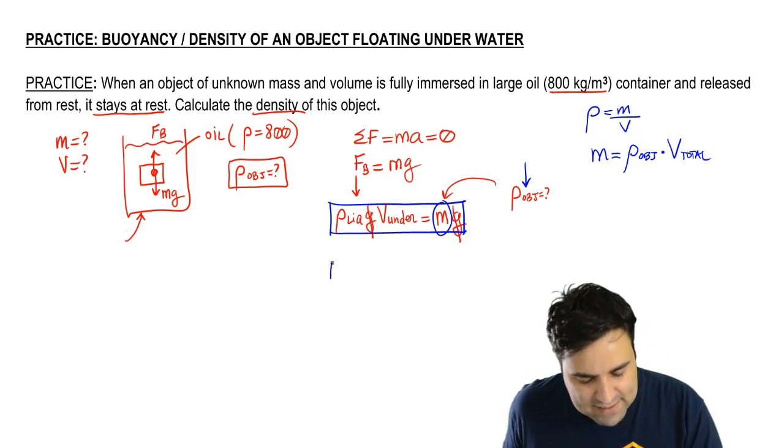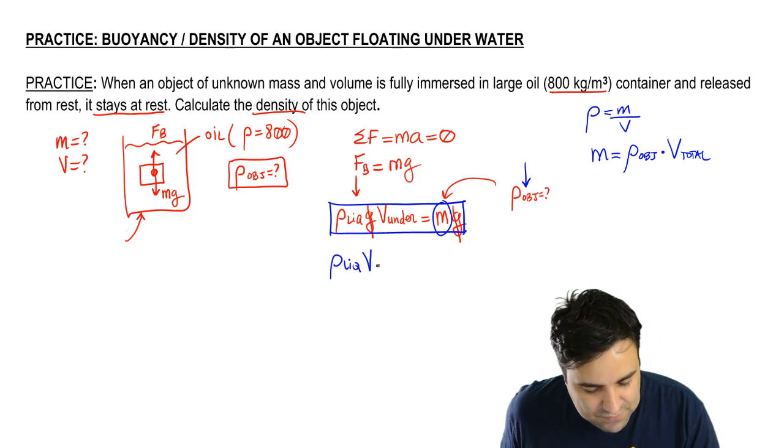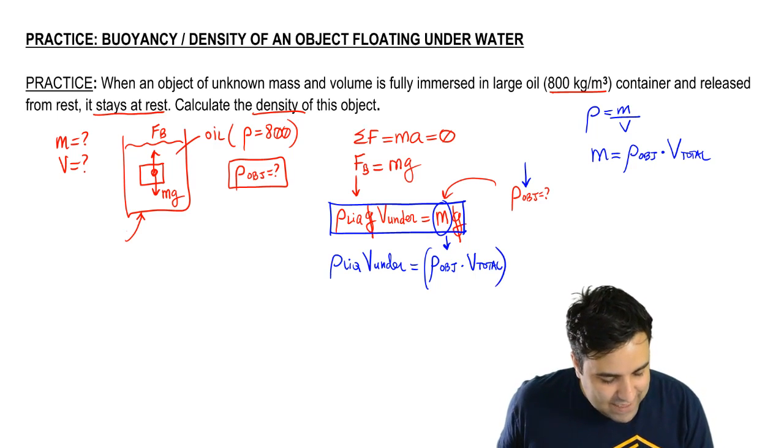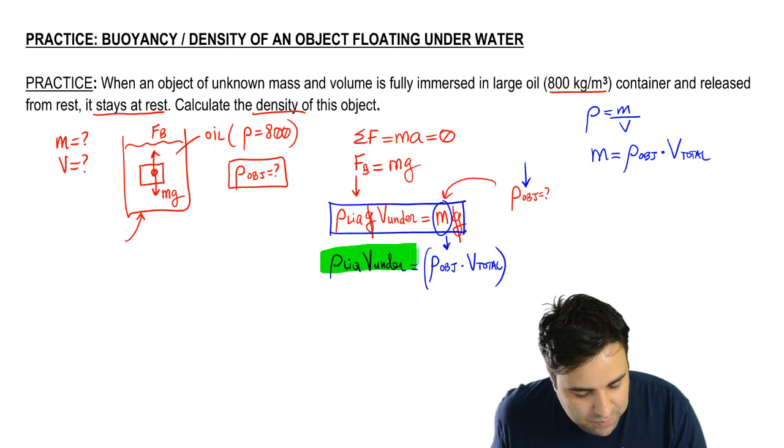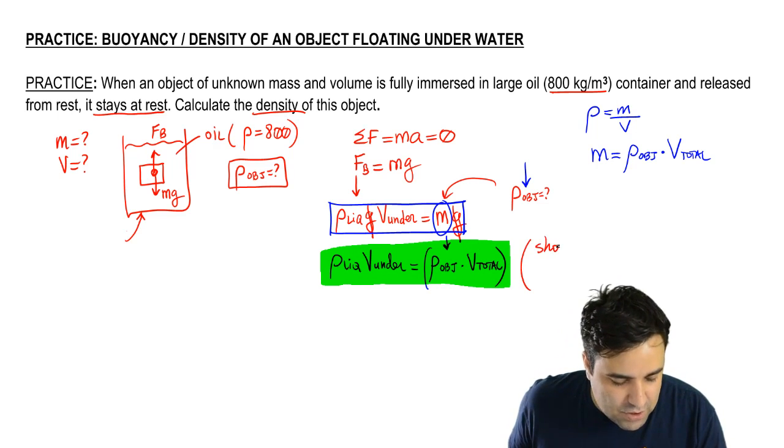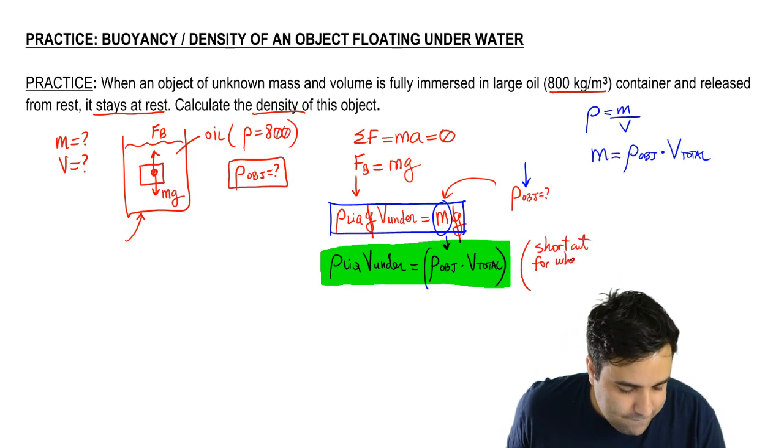So let's write that: density of the liquid times volume under equals density of the object times volume total, where I'm rewriting M over here. And this is actually a pretty useful shortcut. This is a pretty useful shortcut. I'm going to write this here: shortcut for when the object floats.